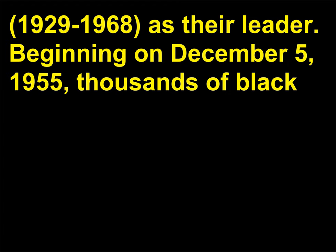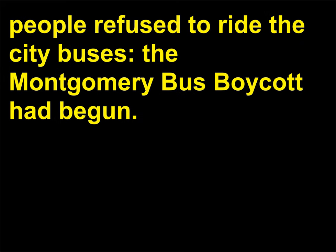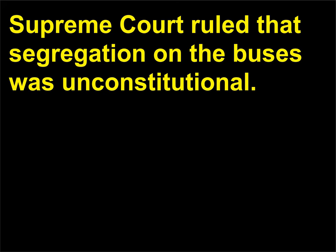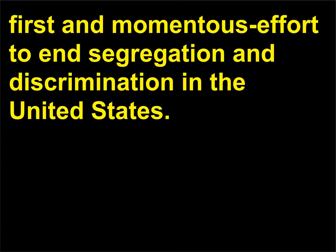Beginning on December 5, 1955, thousands of black people refused to ride the city buses — the Montgomery bus boycott had begun. It lasted more than a year, 382 days, and ended only when the U.S. Supreme Court ruled that segregation on the buses was unconstitutional. The protesters and civil rights activists had emerged the victors in their first and momentous effort to end segregation and discrimination in the United States.